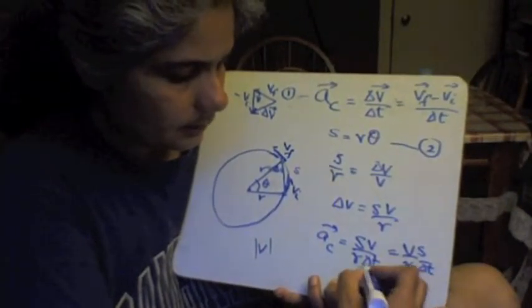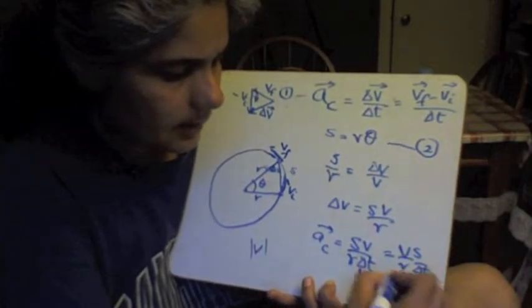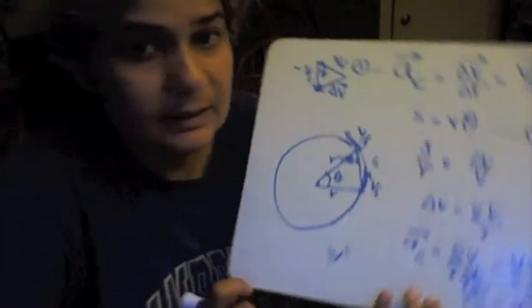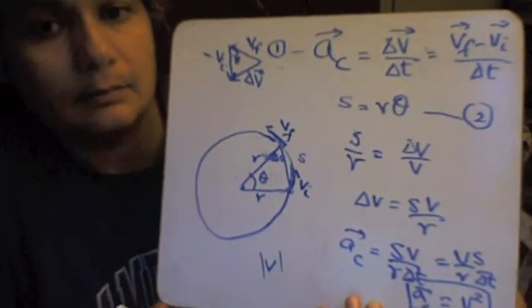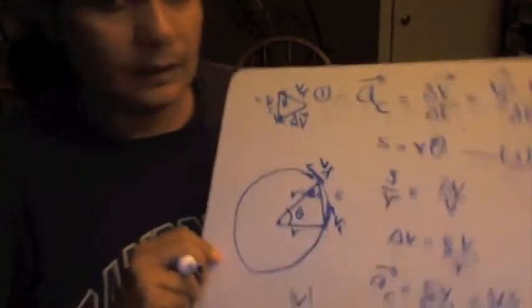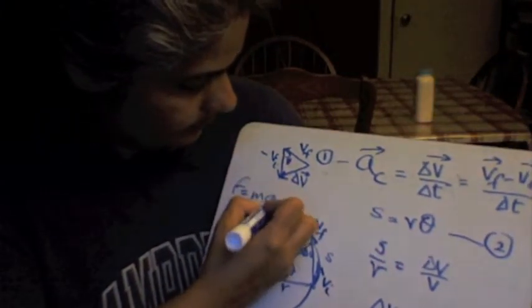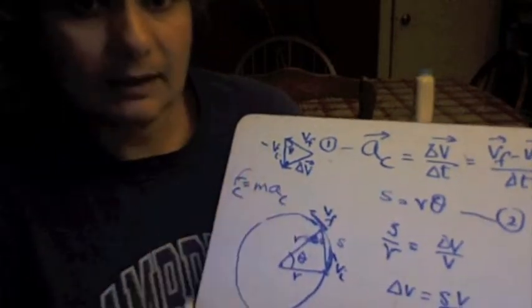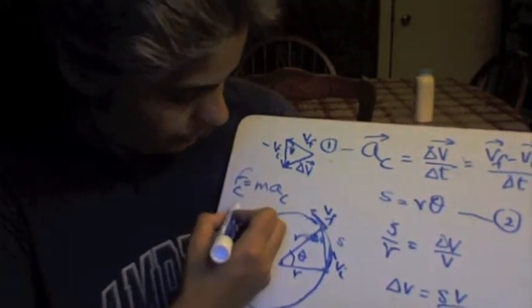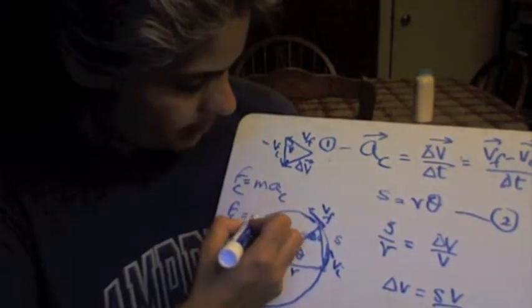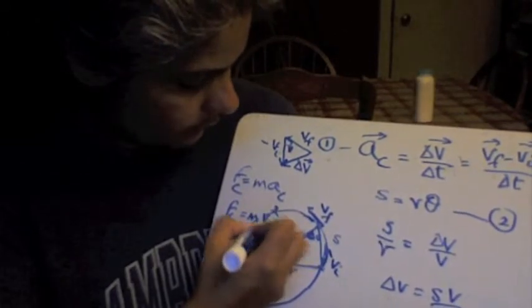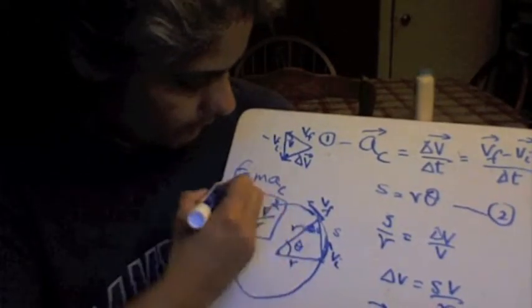And that's your formula for centripetal acceleration. AC is V squared over R. There you have it. Can you see this? So force equals mass times centripetal acceleration. If you talk about centripetal force, you talk about centripetal acceleration. So centripetal force is mass times V squared over R. And that would be the formula for that.